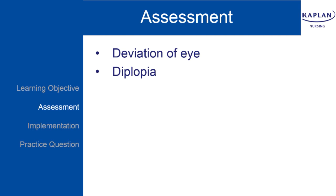Your client may complain of diplopia. You may see your client tilt his or her head or squint the eyes in an attempt to focus their vision, because their eyes do not function as a unit. An assessment that can confirm the presence of strabismus would be an asymmetric corneal light reflection.